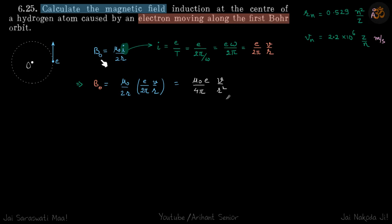So we know from electrodynamics that because of a current in a circular loop, the magnetic field at the center is given as mu0 i by 2r.